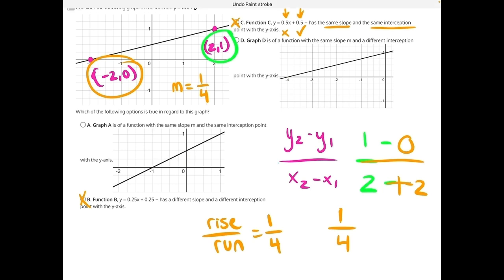For answer choice d, if we start here, we rise 1, we run 4, and if we continue that pattern, we will stay on the graph the entire time, meaning that the slope is the same as it says in the answer choice, and the only other thing we need to check is the interception point.